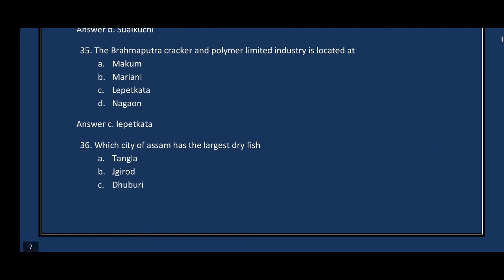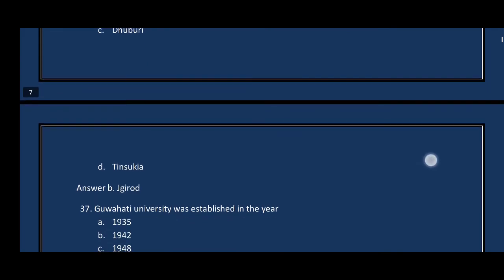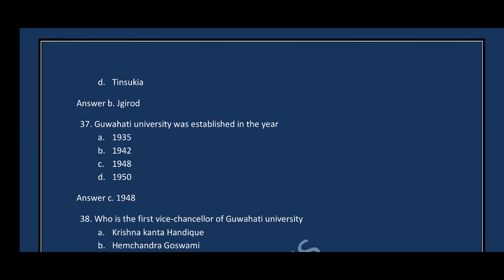Question number thirty-six: Which city of Assam has the largest dry fish market? The correct answer is option B — Jagiroad, Morigaon District. Question number thirty-seven: Guwahati University was established in which year? The correct answer is option C — 1948.